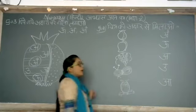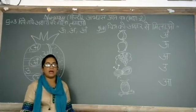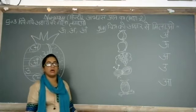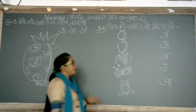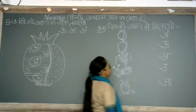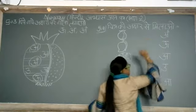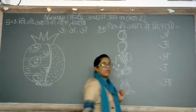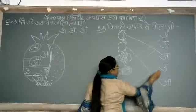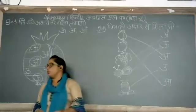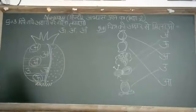Jis mein kya hai? Anar. Toh anar ka akshar kya hoga? Anar ka pehla akshar A. A se anar, so urse anar. Ye hai? No. Iske head pe bindi hai. Toh ye kya hai? Chhota usi. No. Toh ye hamne kiya hai.